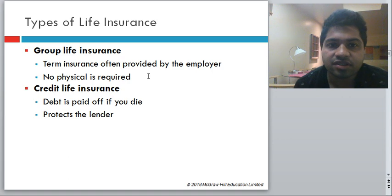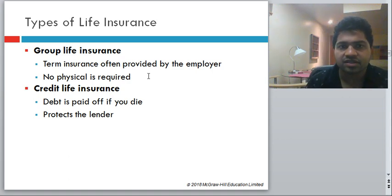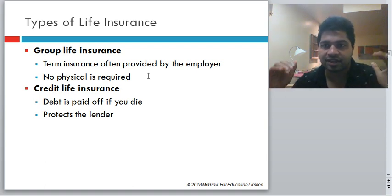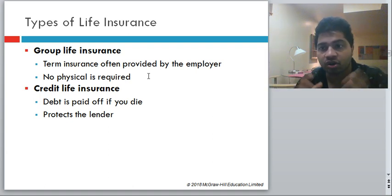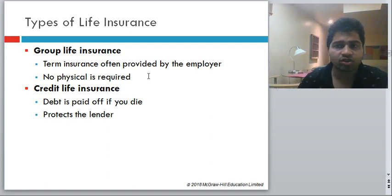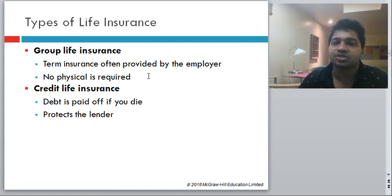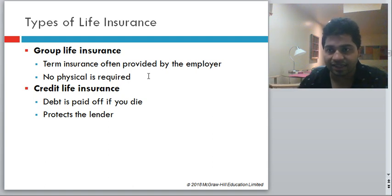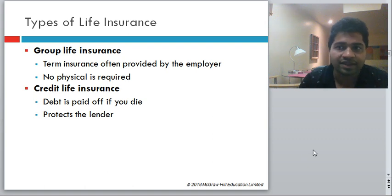The most common type is group life insurance — term insurance provided mostly by employers. They form a group and negotiate with the insurance company. Generally no physical exam is required, only proof of employment. The insurance stops the moment you stop working. Credit life insurance is taken by the indebted company — generally the debt is paid off if you die, and it protects the lender or bank rather than you.